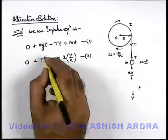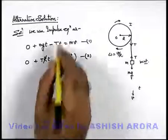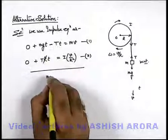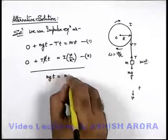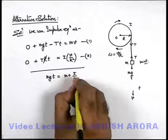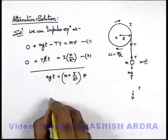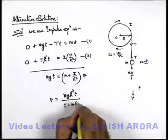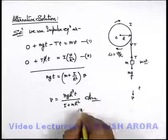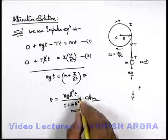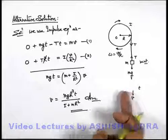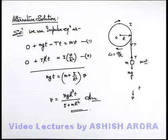Taking R to the right side of equation two and adding both equations, the tension impulse T t cancels out, giving m g t equals (m plus I by R squared) times v. Simplifying, the speed is m g R squared t divided by (m R squared plus I). You can verify this is the same expression obtained using the equation of motion on the previous approach, confirming that both methods — equations of motion and the impulse equation — yield the same answer.